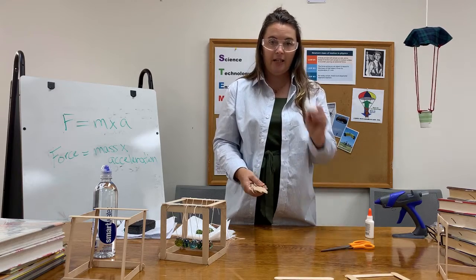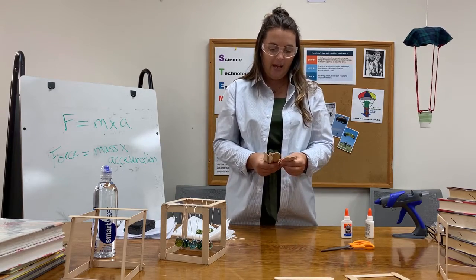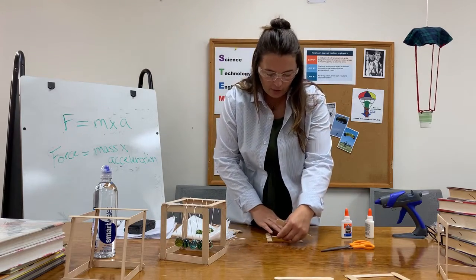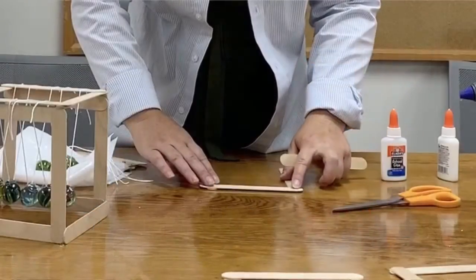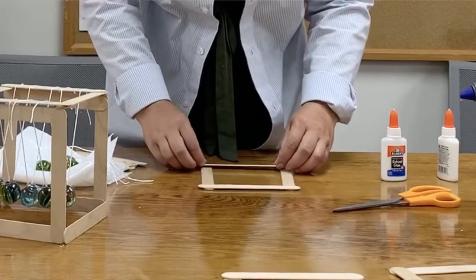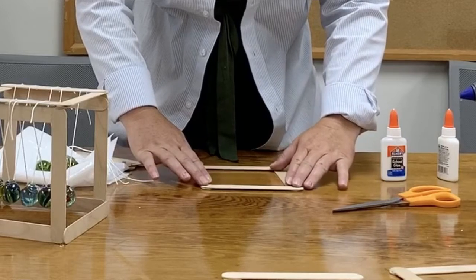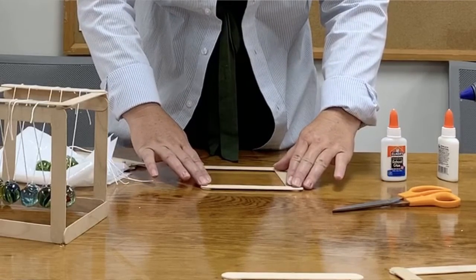So first thing you need to do is get your glue and we're going to start with four popsicle sticks. This is real easy. You're going to get your popsicle sticks, make a not a wonky square, but a nice straight square.